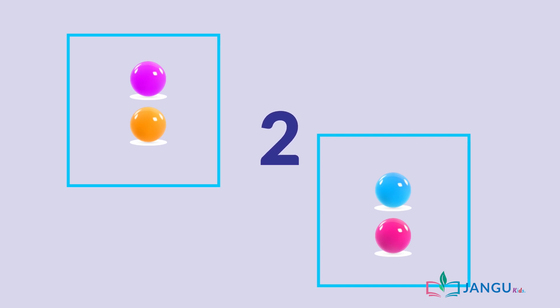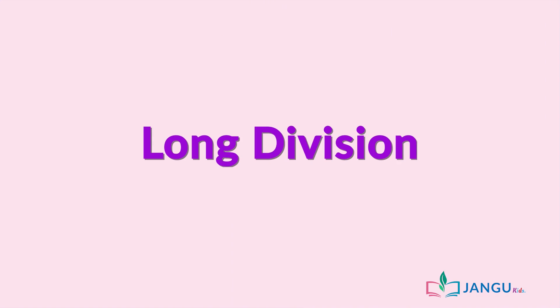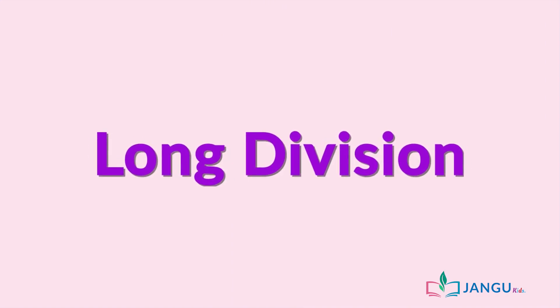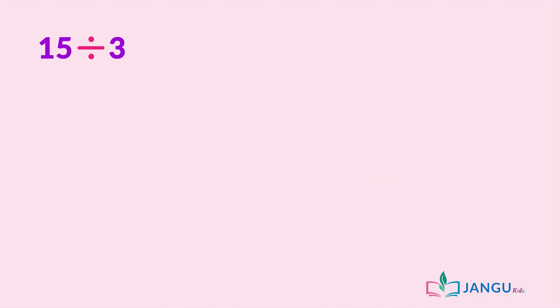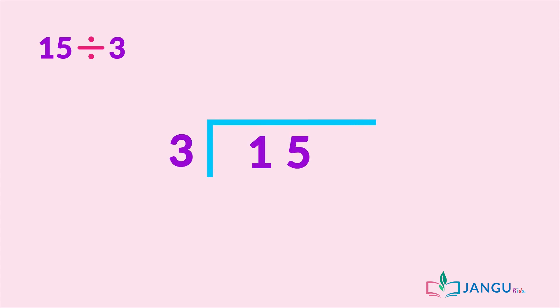Let's divide more numbers by 3, 4, 5, and 6 in the following examples using a method called long division. 15 divided by 3. We draw it out first, then we divide the numbers individually.